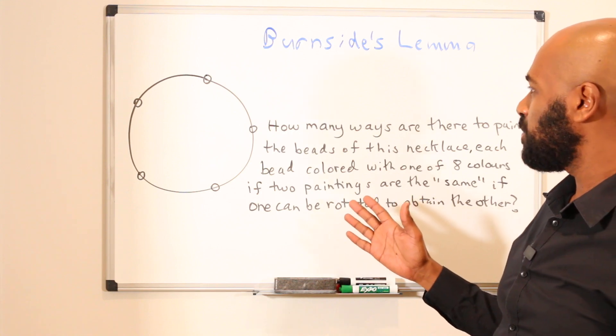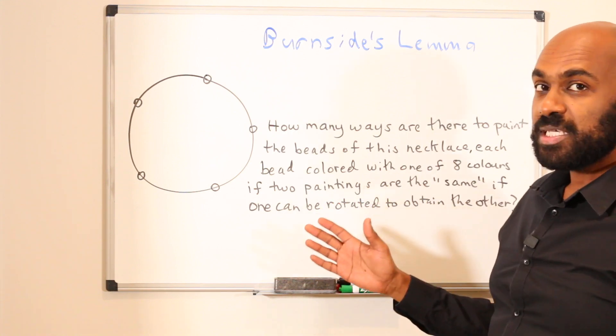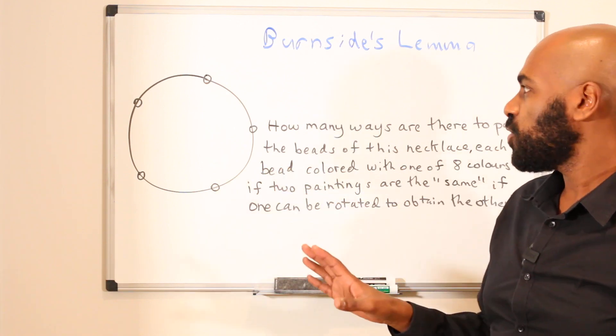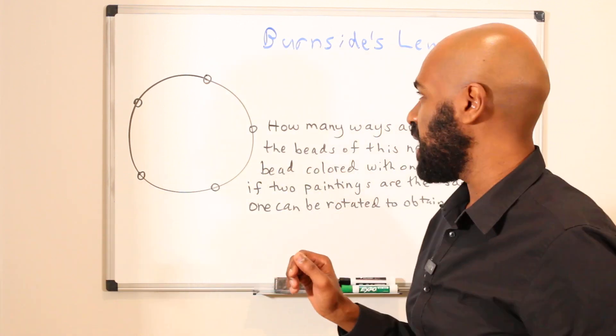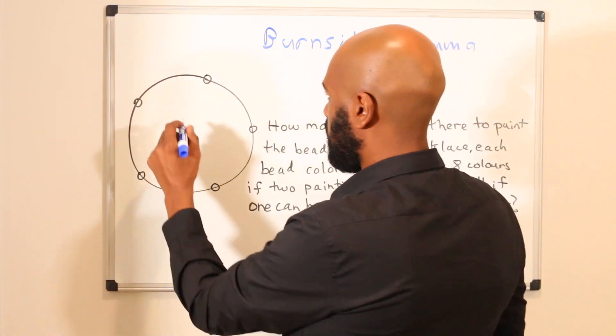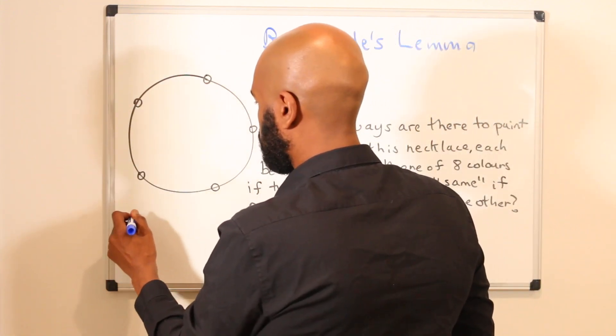So how does Burnside's lemma work? It essentially says the following: if you want to count the number of paintings up to this rotational symmetry, what you can do is write all of the symmetries down. So the symmetries of this necklace...